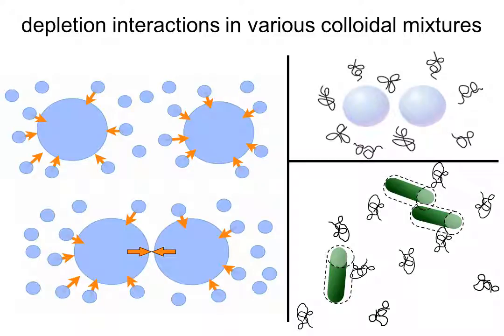In case of mixtures of colloidal rods, like viruses for instance, the addition of non-absorbing polymers can induce the well-known isotropic nematic phase transition at very low rod concentrations.